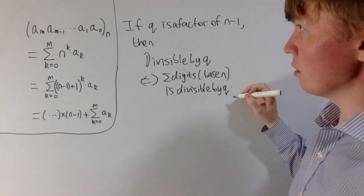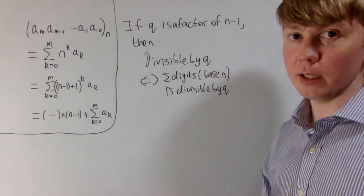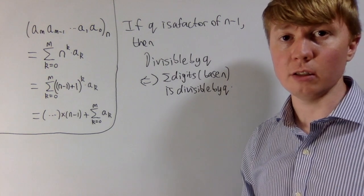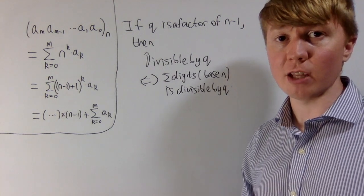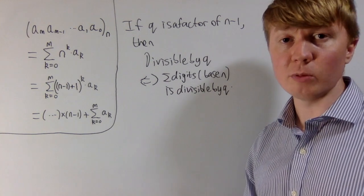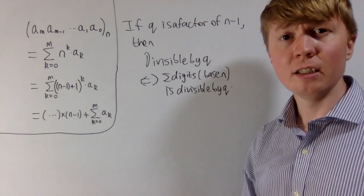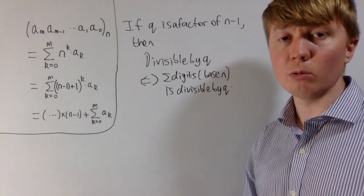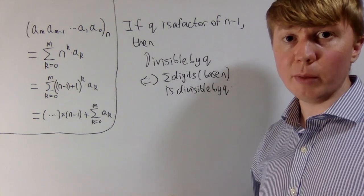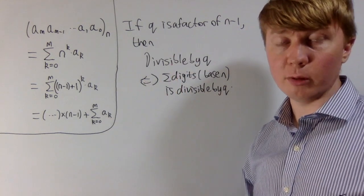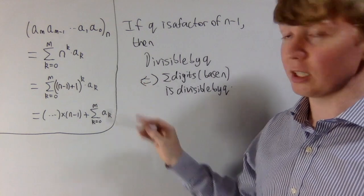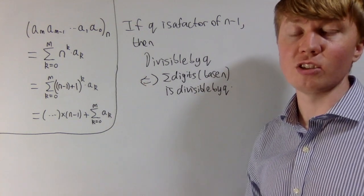The moral of the story is: if you want a base n system where this digit-sum divisibility rule works for lots of different numbers, it's a good idea to choose n so that n-1 has many factors. There are also other nice divisibility rules — for example, in base 10, divisibility by 2, 5, and 10 is easy to check by just looking at the last digit, because 2, 5, and 10 are factors of 10. If you want that last-digit rule, you want n to have lots of factors. Unfortunately, it's difficult to combine both, since n and n-1 share no common factors other than 1.